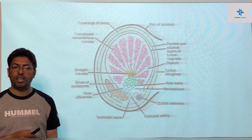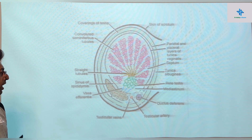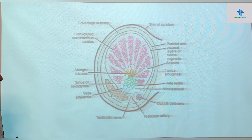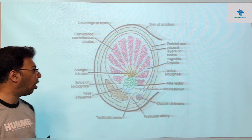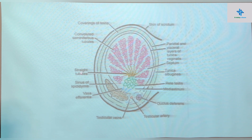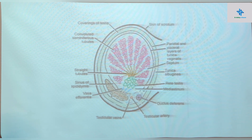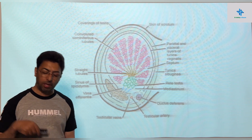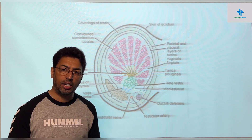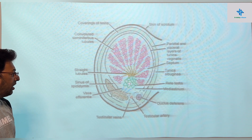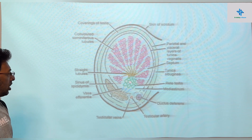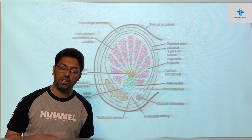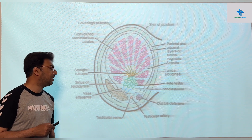Once we go further, the seminiferous tubules tend to lose their convolutions and spiral pattern; they straighten up and are given the name straight tubules. Then the straight tubules join together — in anatomy, anything that joins together is called a reticulum or network. These straight tubules form a reticulum given the name rete testis, pertaining to a network.